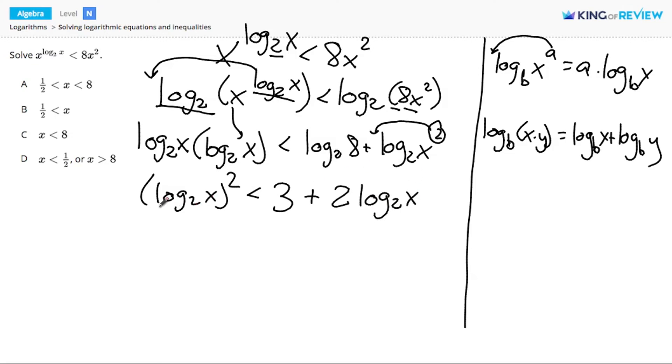Now since I have the log base 2 of x squared and the log base 2 of x by itself on the right, I'm going to introduce a variable y and call that y equals log base 2 of x. If I replace all the log base 2s of x with y's, this becomes a much simpler problem.